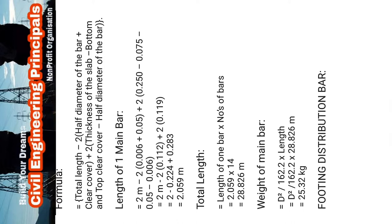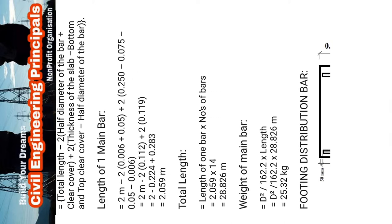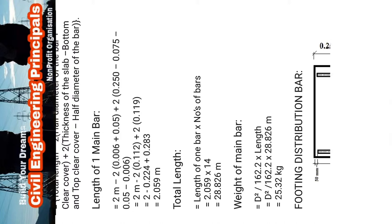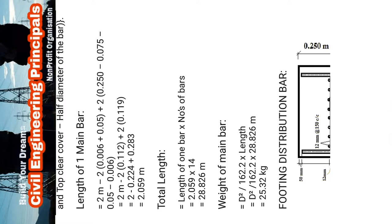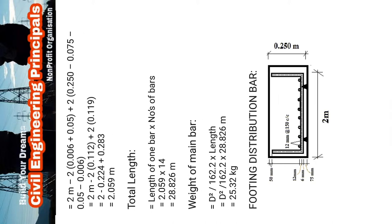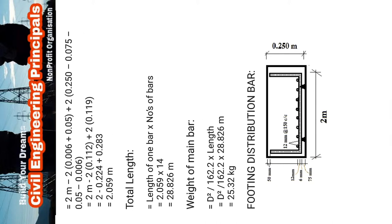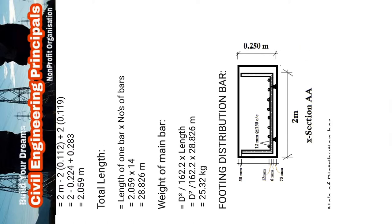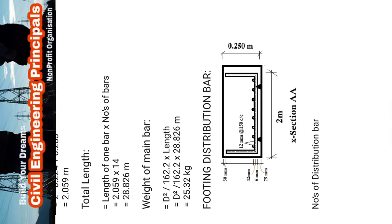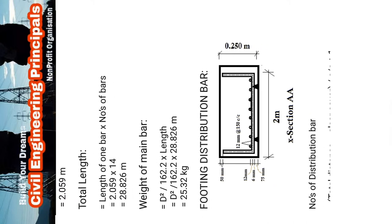Total length of main bars: length of one bar multiplied by number of bars = 2.059 × 14 = 28.826 meters. Weight of main bar using formula d² divided by 162.2, multiplied by length — solving the equation we find 25.32 kg.